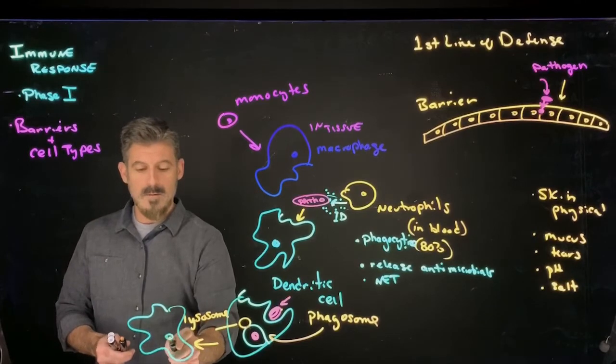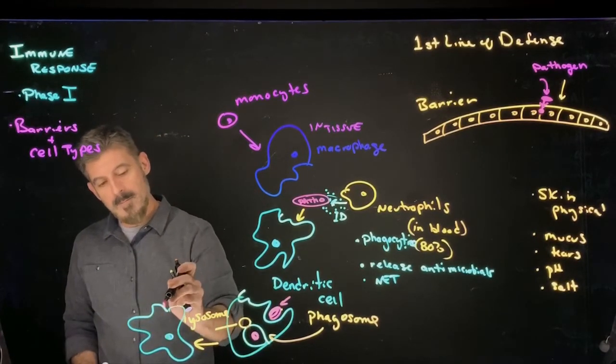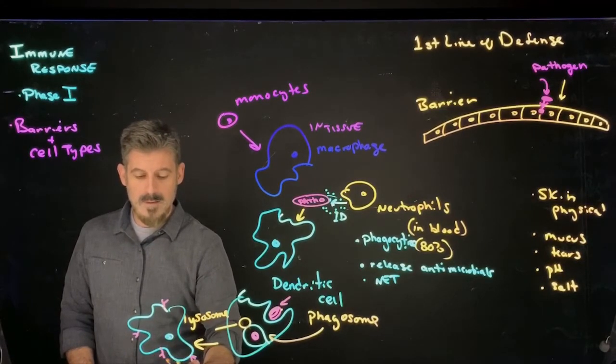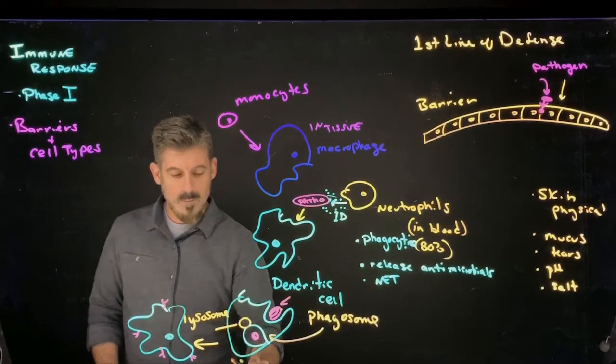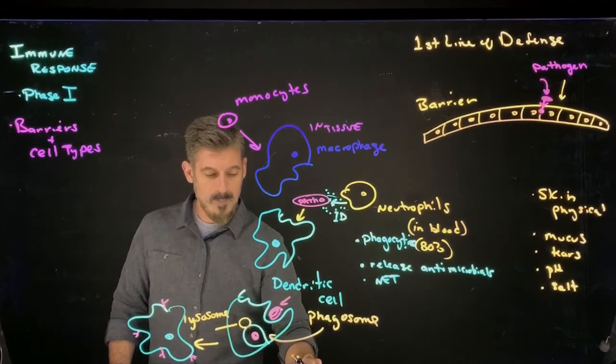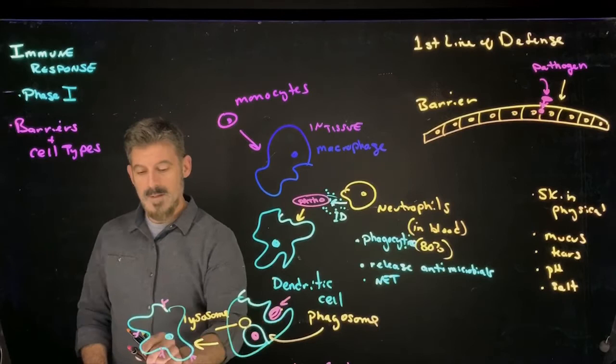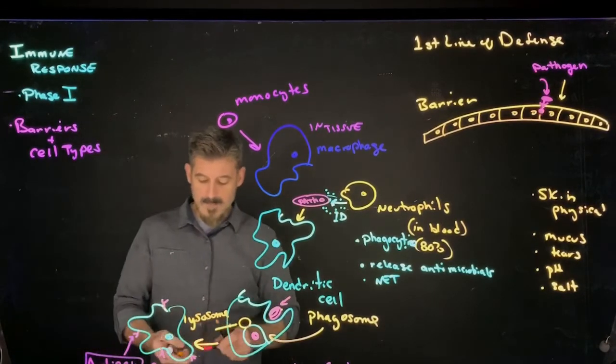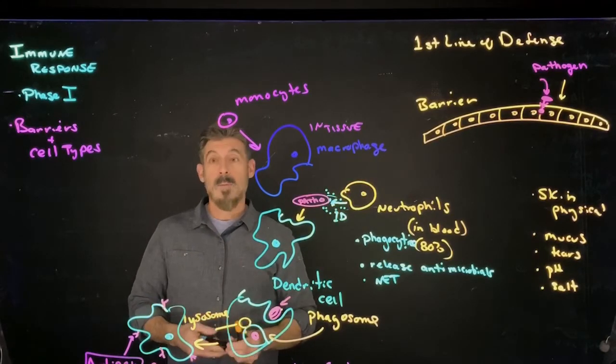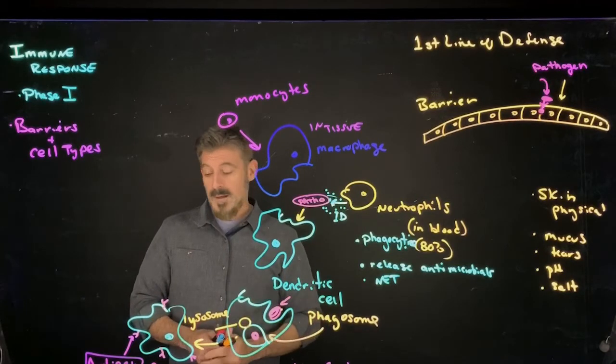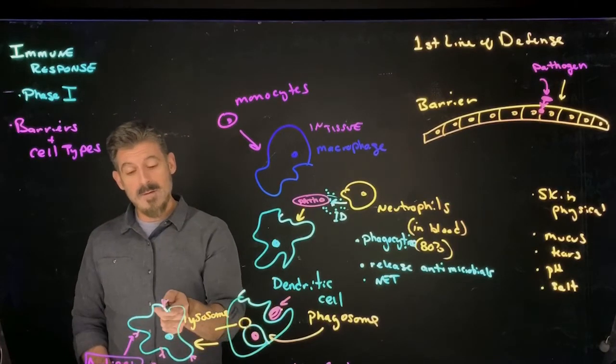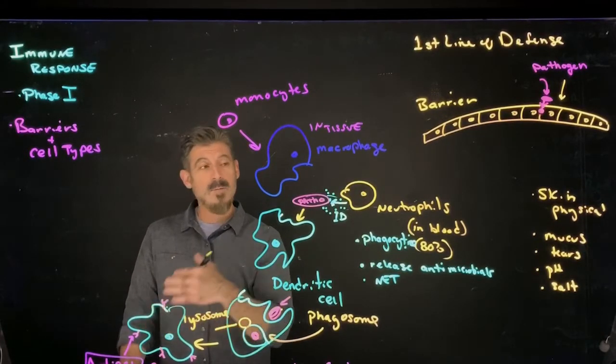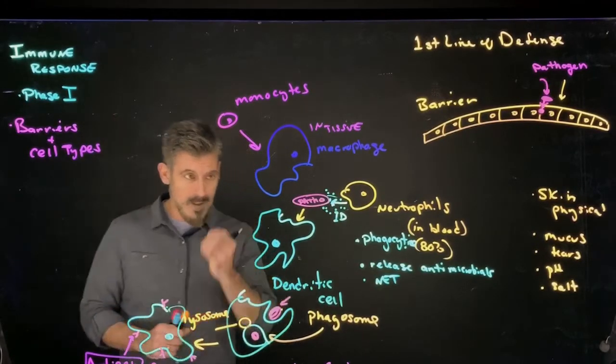The dendritic cell will take some pieces of this bacteria and put it on the surface. This cell itself we call an APC, an antigen presenting cell. So these things are antigens. Antigens are chemicals that are unique for an organism or particle. They're not part of you, they're not recognized as part of you, so your body will react to these antigens. Now the dendritic cell is carrying around antigens or unique molecules from the pathogen, and then they can go on to activate or interact with other types of cells.